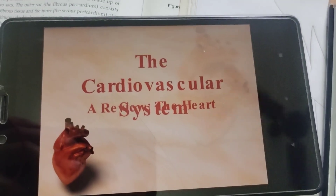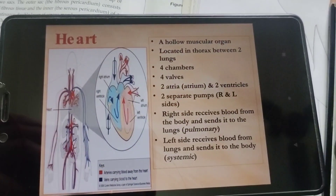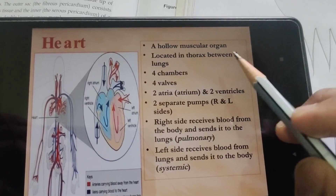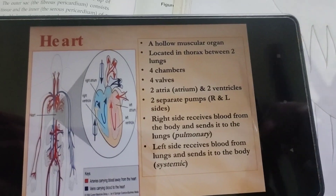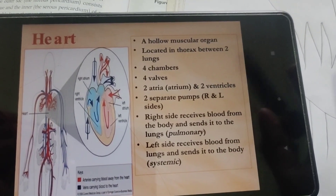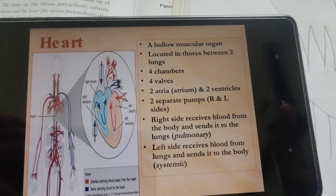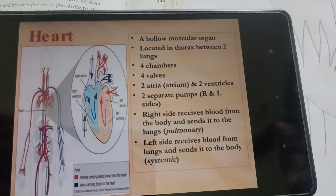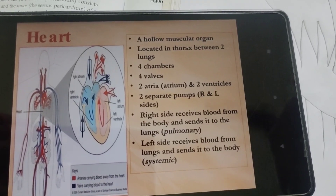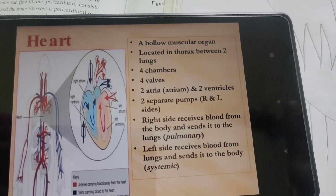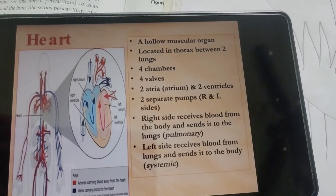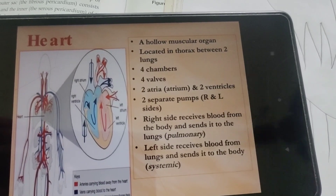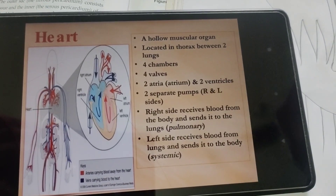Our today's topic is the cardiovascular system. First is the heart. The heart is a hollow muscular organ located in the thorax between the two lungs. 'Hollow' means the organ having nothing inside, and 'muscular organ' means it is made up of muscles. The thorax refers to the chest region of the body.